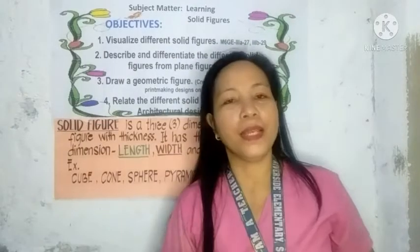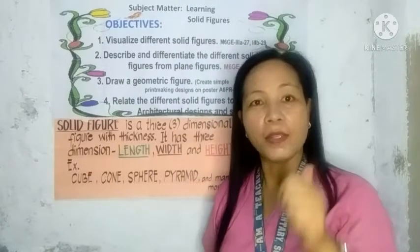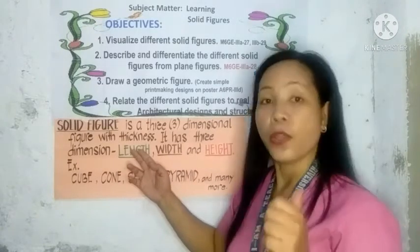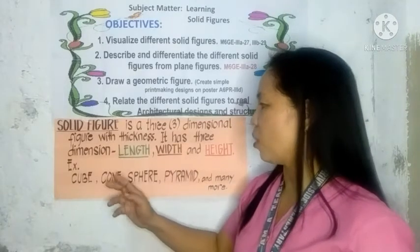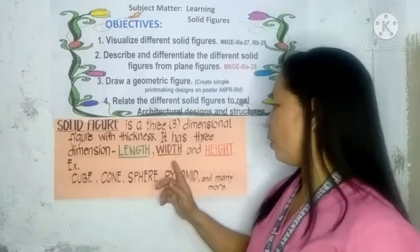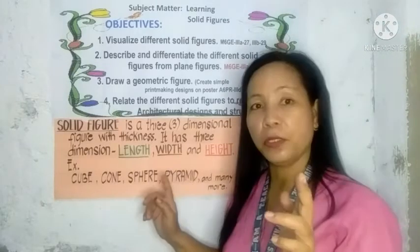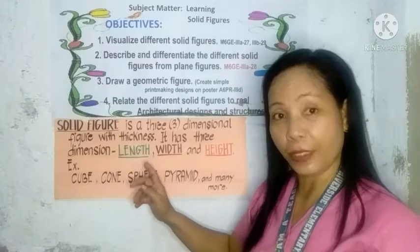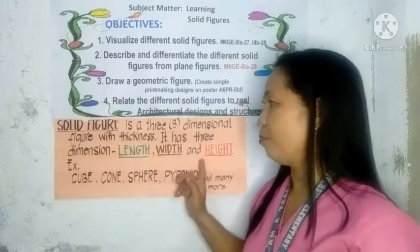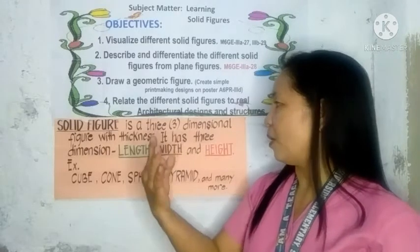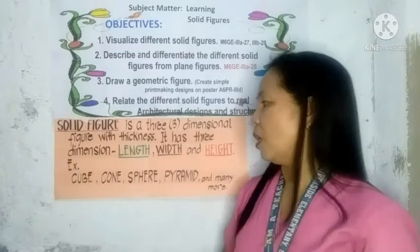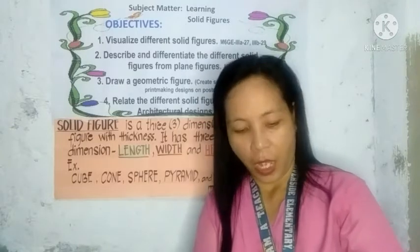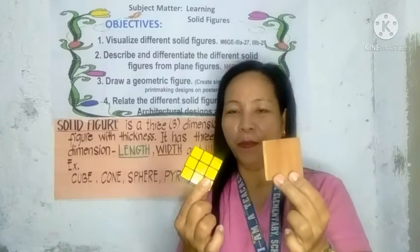A solid figure is a three-dimensional figure with thickness. It has three dimensions: length, width, and height. In a solid figure, you need to find and identify the length, width, and height. Let's look at our first example — the cube.